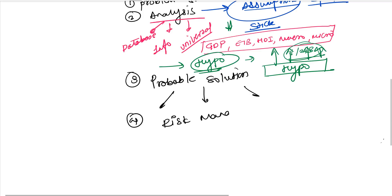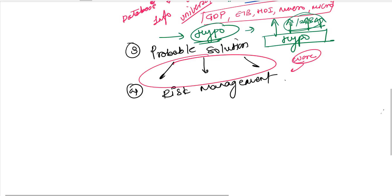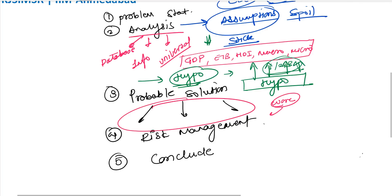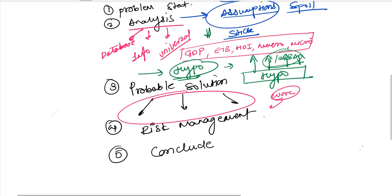At the same point in time, you also need to understand what if your solution doesn't work. Then what's going to be your disaster management, your risk management? Risk management is basically where you introduce: if this fails, what is going to be plan B or the backup? And then, in the end, once you've discussed everything, you can conclude your entire case study. So your case study flow is: problem statement, analysis, probable solutions, risk management, and conclusion.